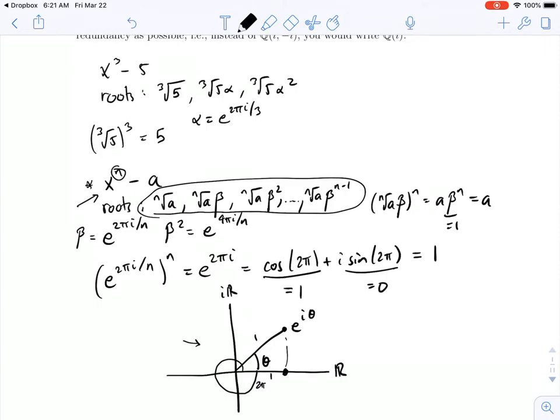Okay, now once I have the roots, I know I can find my splitting field. And I find it just by adjoining all the roots to Q. So, the splitting field will be Q adjoin the cube root of 5, cube root of 5 alpha, cube root of 5 alpha squared.